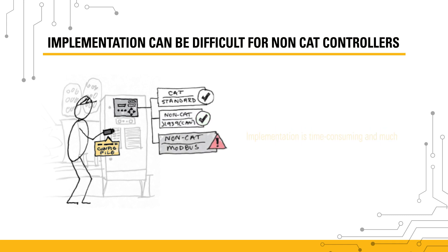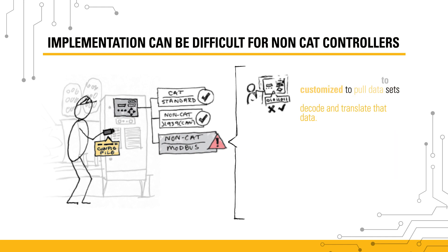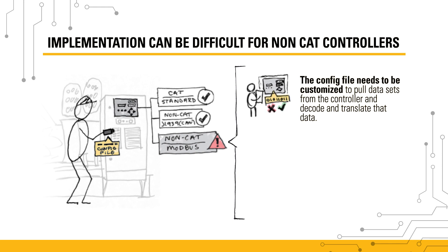But for non-CAT controllers that don't use the standard communication method, implementation is time-consuming and much more difficult. Additional steps must be added to the implementation process. The configuration file must be customized. Non-CAT controllers with unique protocols format and store data differently, depending on the controller's brand, model, firmware, etc. Because of this variation, the standard config file won't work, so a customized config file to decode the controller's data must be built from scratch.